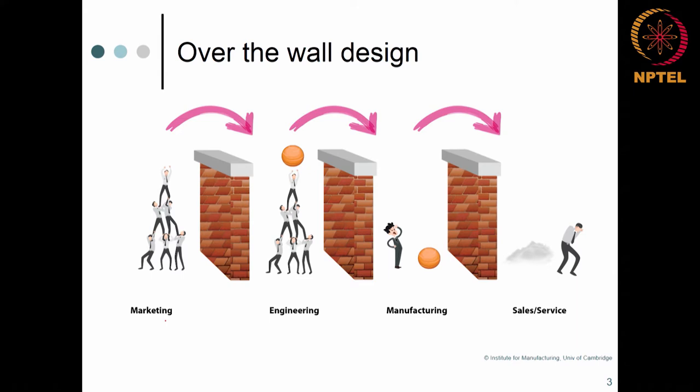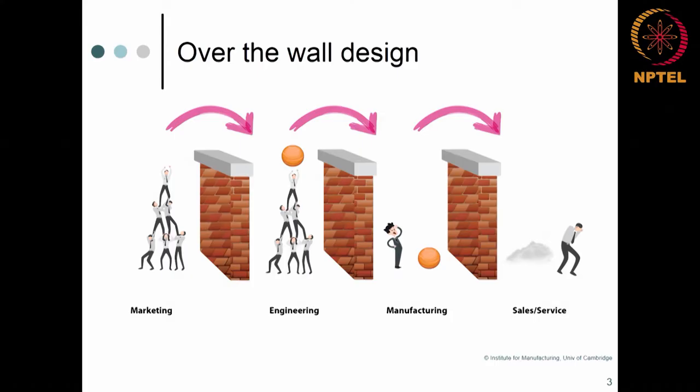The marketing team gives out a concept — says you need to look at an SUV — and provides raw information about what a potential buyer would expect from the new product. These potential criteria need to be converted into engineering criteria by the engineers and designers. What happened in earlier days is there was no interaction between the marketing team and the engineering team. The end product of the study was just given to the designers, who were supposed to realize that idea into a product.